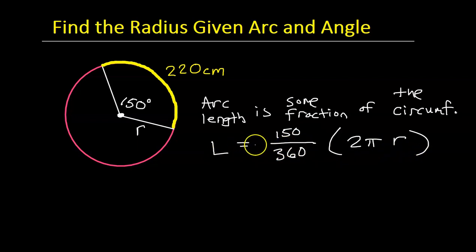So sometimes they give us the radius, and we just plug it in over here, and we use that to get the arc length. But sometimes they give us the arc length, and we put it in over here on the left, and we will use that to find the radius. And that's what's happening right now.